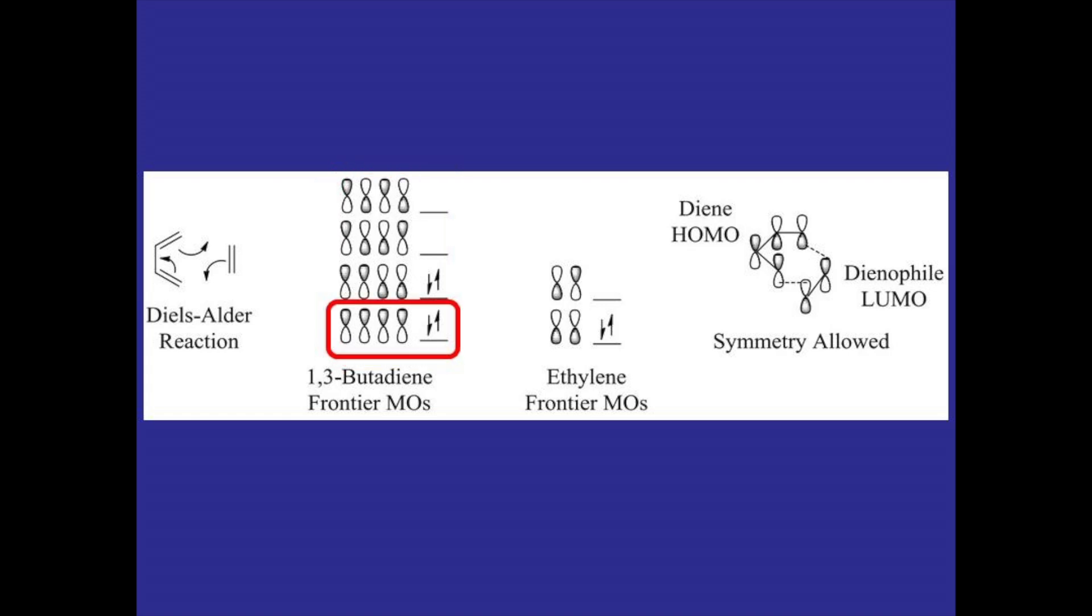The first one being pi one where all of them are in phase with each other, ranging up to pi four where they are all out of phase with each other and we see three nodes and that's why it's the highest in energy. There are four pi electrons in this conjugated system so they will fill the pi one and pi two orbitals, meaning that pi two will be the HOMO and pi three will be the LUMO.